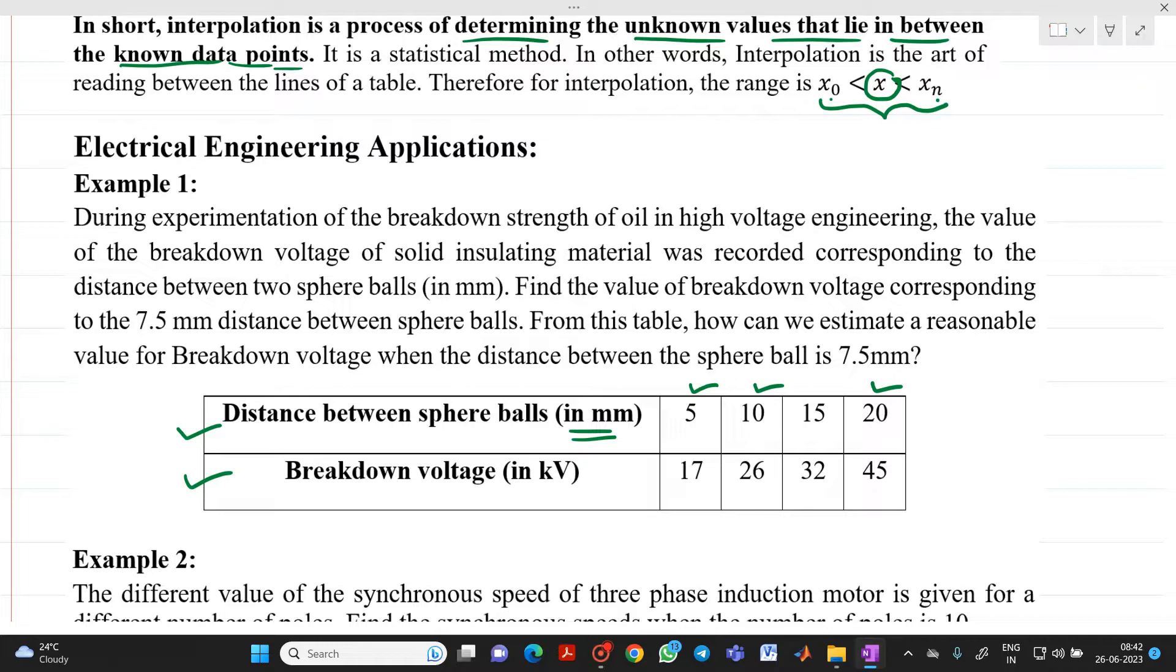Now, after completing experimentation, after returning to classroom, suppose I want what will be the value of breakdown voltage if distance between two electrodes is 7.5 mm. In that case, what you will do? Is it required to go again to laboratory, again arrange all the setup, perform experimentation, keep the distance between two electrodes is 7.5 mm and then take out the reading? No. If you have a set of tabulated data and if you want to find out value of y corresponding to x in between the range starting from x0 to xn, then we can use here a numerical method which is called as interpolation.